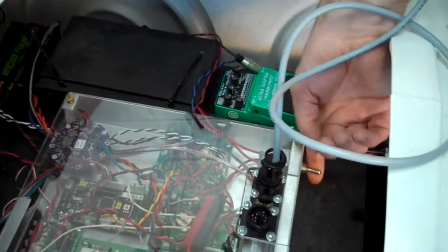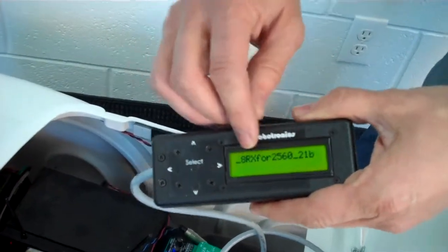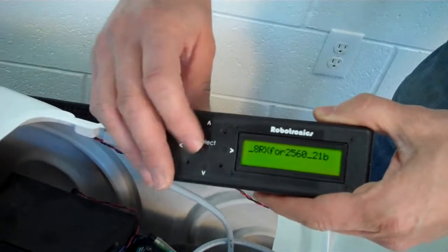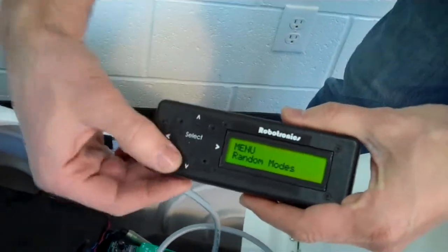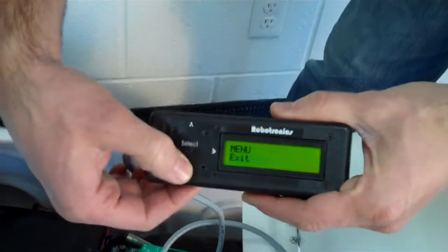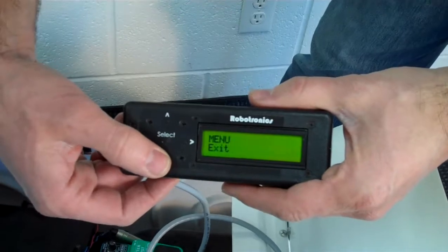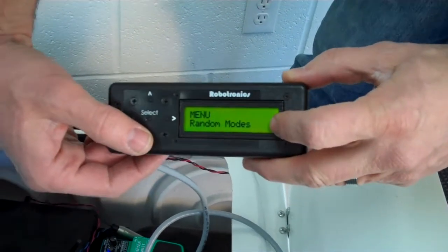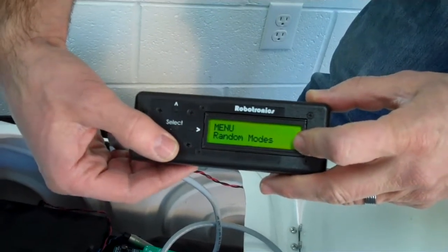And then after it's plugged in, we turn it on. And when it first turns on, this is the version of the code that's in the robot. And if we press select, it will go into the menu. And we can do the up-down button to go through the different things that we can change. We have the random modes, whether we can turn on whether the eyes are blinking or not, and some other random features.